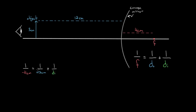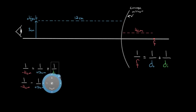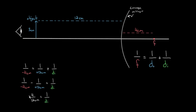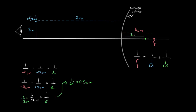So we have one over negative four minus one over 12, equal to one over the image distance. On the left side: negative one-fourth is negative three-twelfths, and negative three-twelfths minus one-twelfth is negative four-twelfths, which simplifies to negative one-third. So one over the image distance equals negative one-third, and flipping that gives an image distance of negative three centimeters. Since it came out negative, the image is behind the mirror — three centimeters behind it.